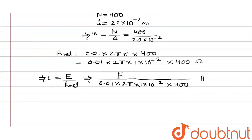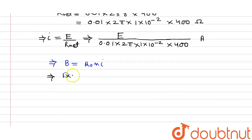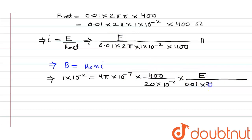Because current is flowing in the solenoid, a magnetic field is generated. The magnetic field is given by B = μ₀nI, where I is the current and n is the number density. The magnetic field strength is given as 1 × 10⁻² tesla. Substituting: 1 × 10⁻² = 4π × 10⁻⁷ × (400 / 20 × 10⁻²) × (E / (0.01 × 2π × 1 × 10⁻² × 400)).